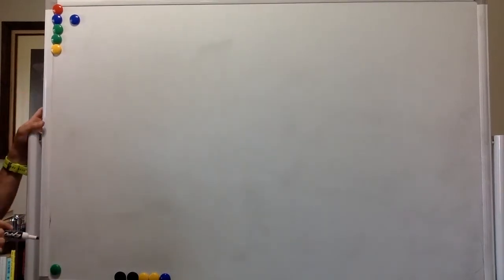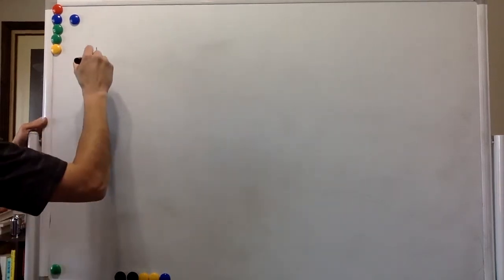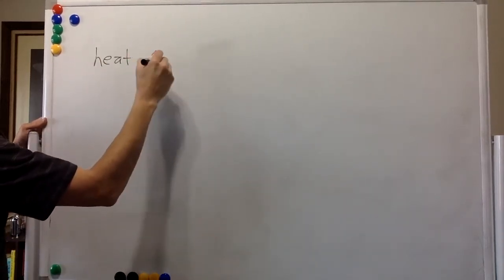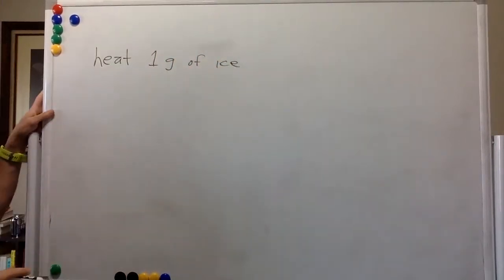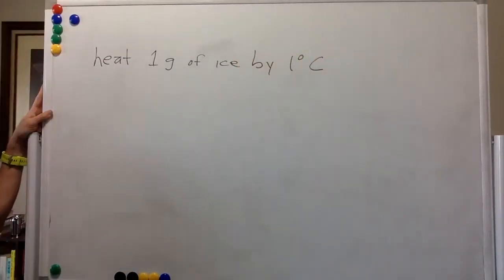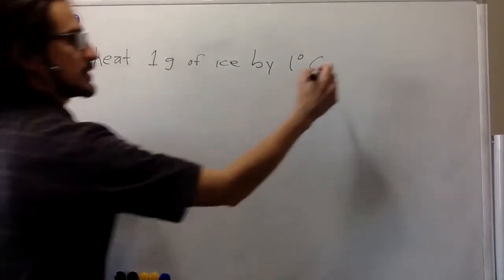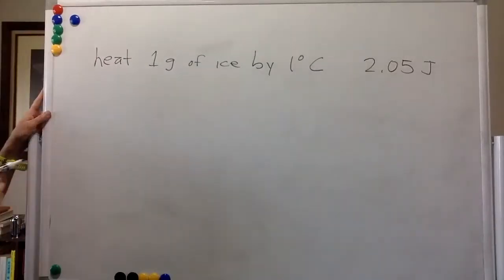So in this problem you're given some data. So it says that the amount of energy required to heat one gram of ice by one degree Celsius is 2.05 joules.